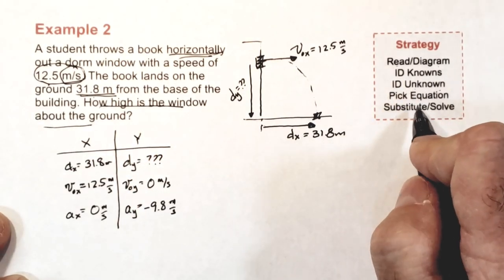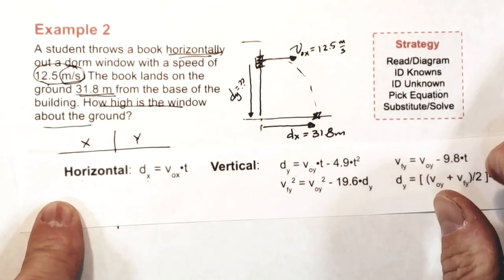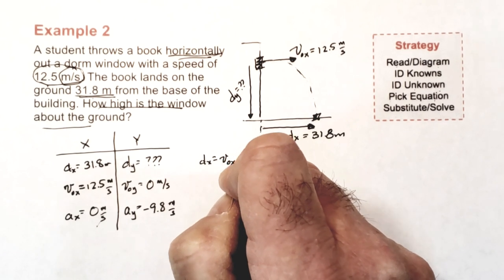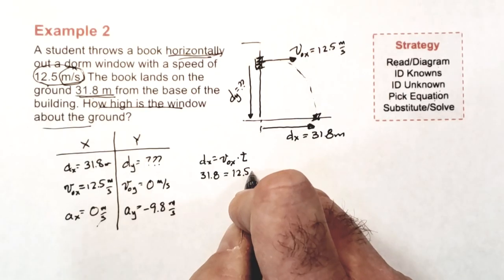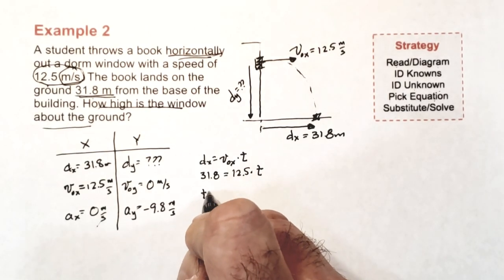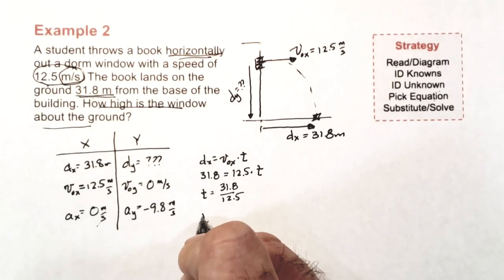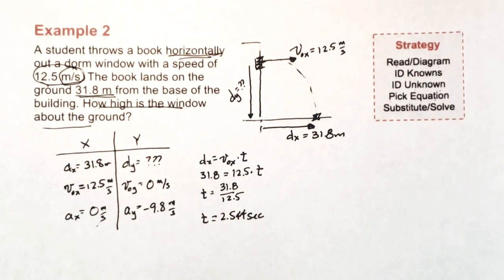Now I'm ready for steps four and five of the strategy. I look at my XY table and notice there's three bits of information in the X column. So I'm going to need to use an X equation to solve for T. There's only one of those, so I write it down. DX equals VOX times T. Using values from the X column, I substitute them into the equation. Now I have an algebra problem. I divide both sides by 12.5, and then using a calculator, I calculate the time to be 2.544 seconds.